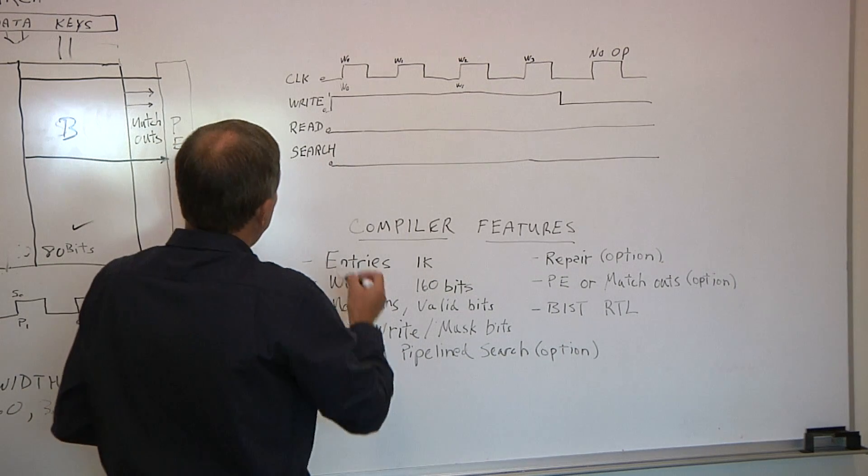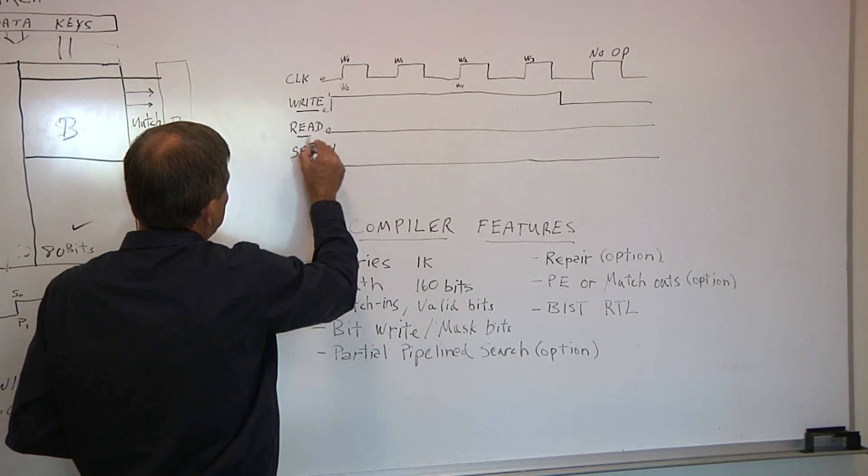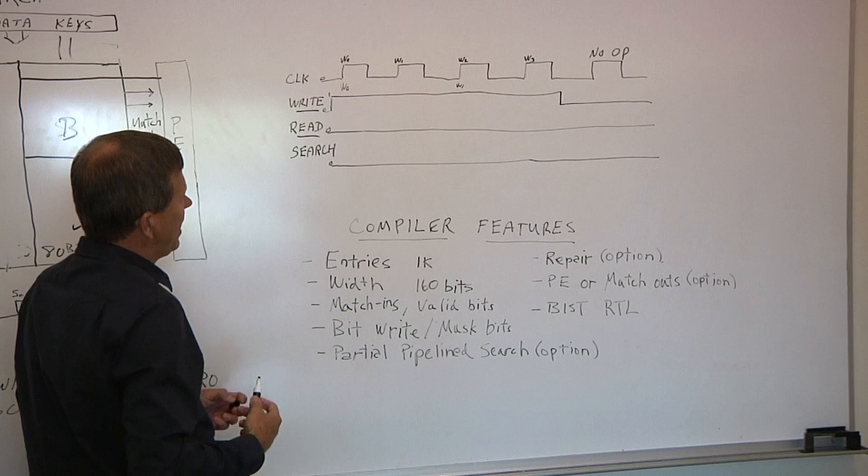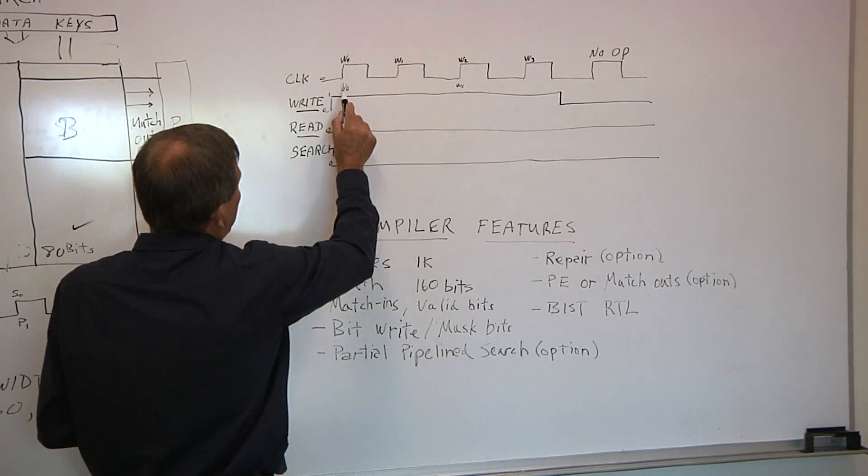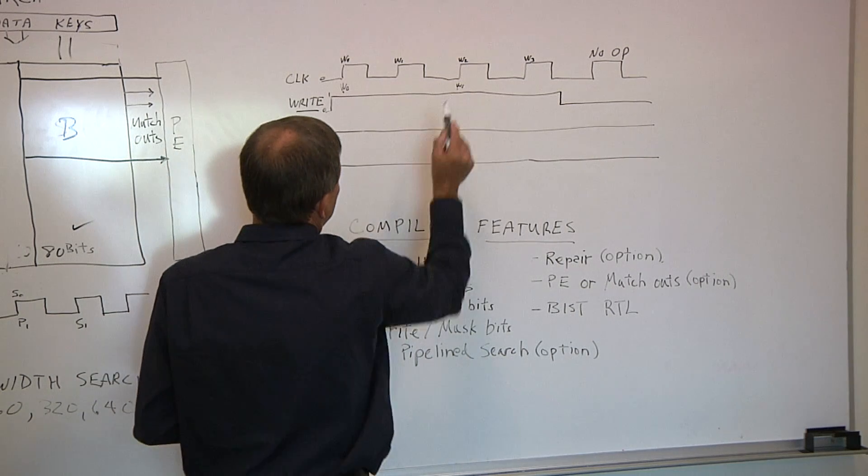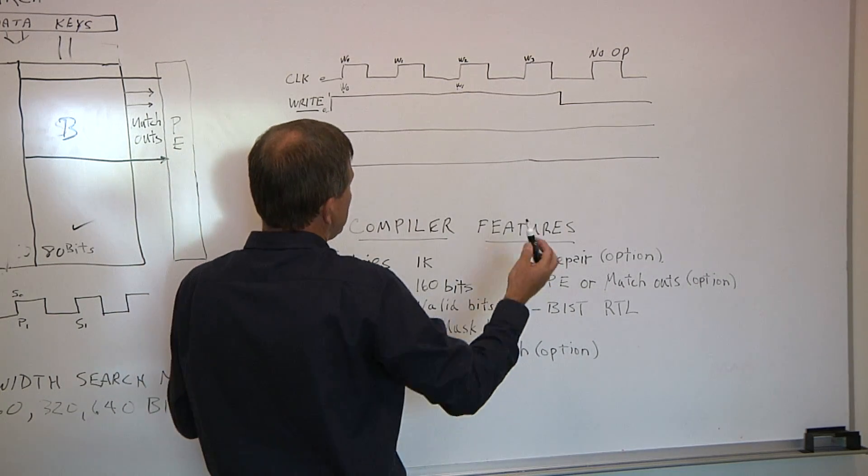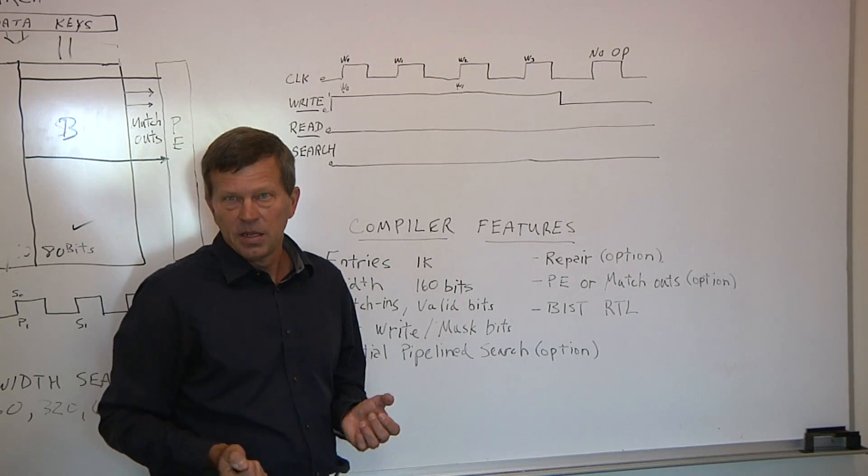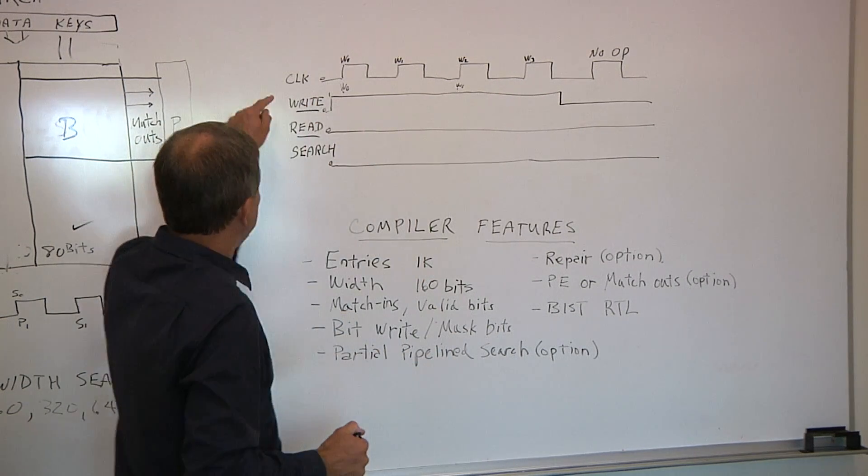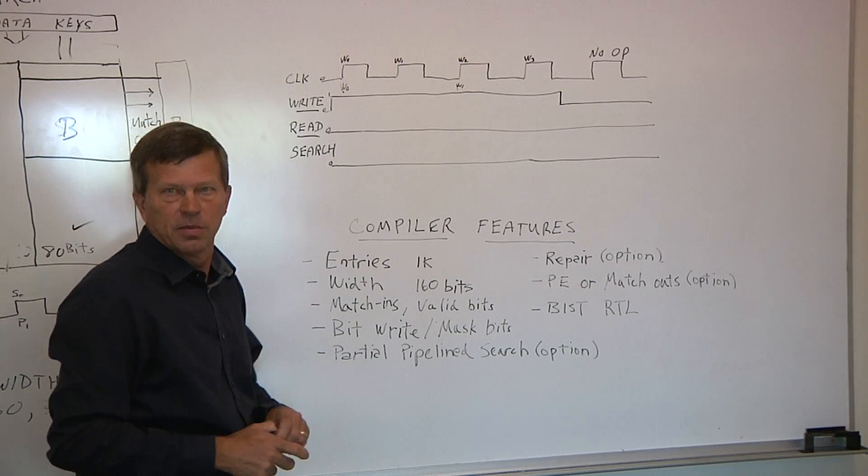What we've done is we came in here and reduced the read and write circuitry. And we said, let's do a read or write in two cycles. So if you look at the bottom, we're doing a write here and a write here. So you're doing two writes versus four. The advantage of doing this is we're able to reduce the circuitry, as I said, and not worry about the performance of the read and write, keeping up to the search performance.